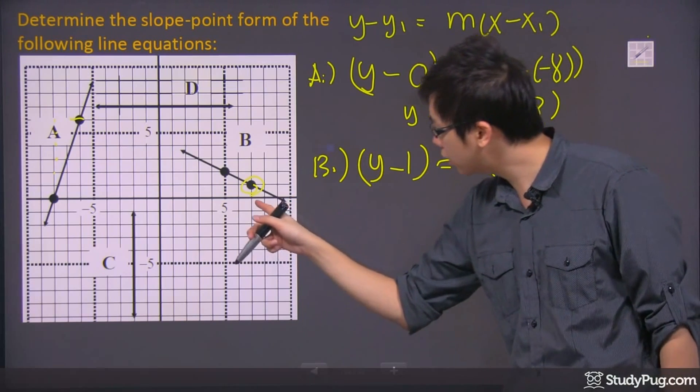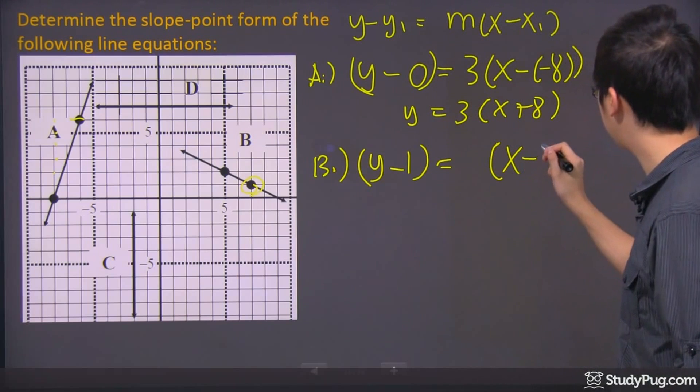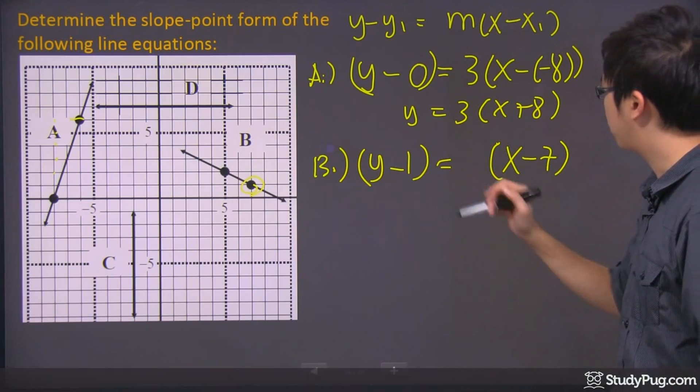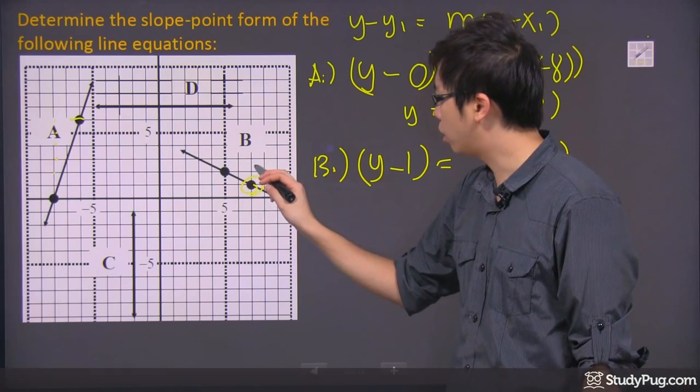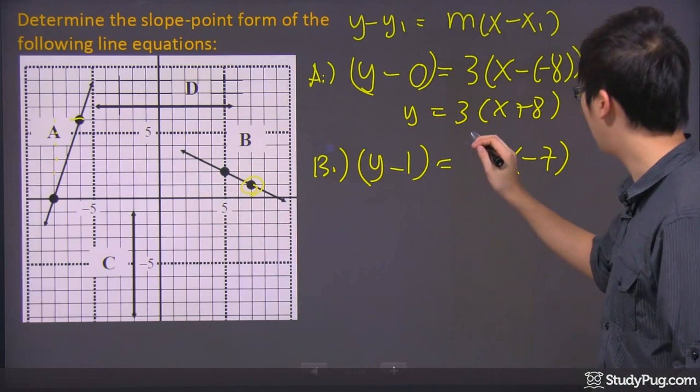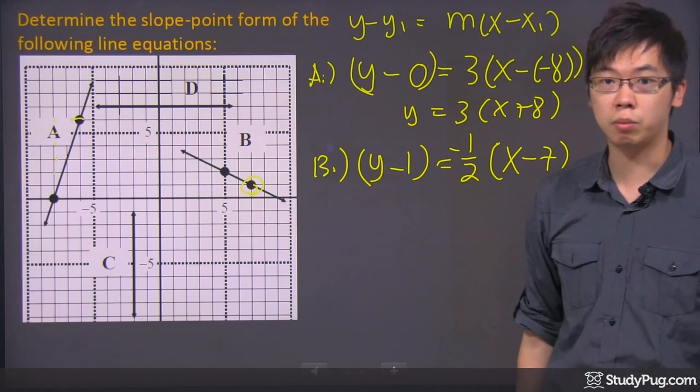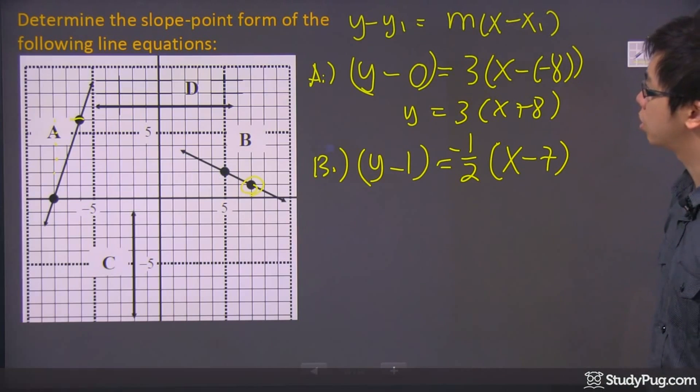It will be x minus 7. So I'm going to put x minus 7 right here and I'm going to put my slope over here which is going to be up 1, left 2. So it will be up 1 but left 2, so it's a negative number. So that is your slope point form for this equation right here.